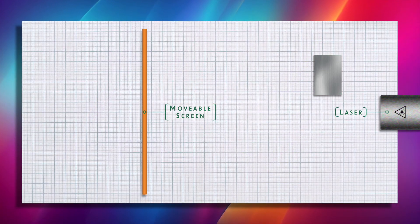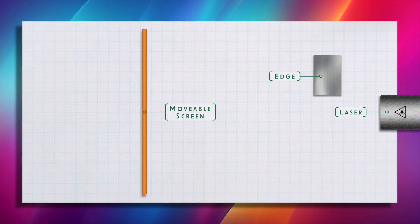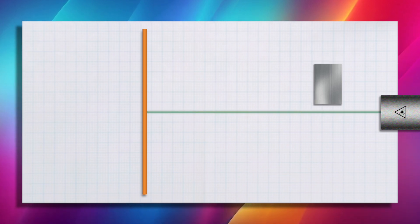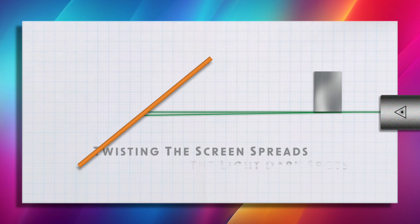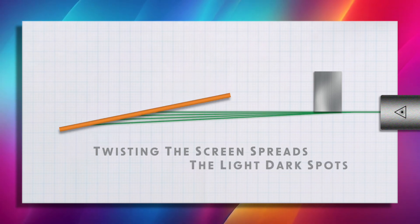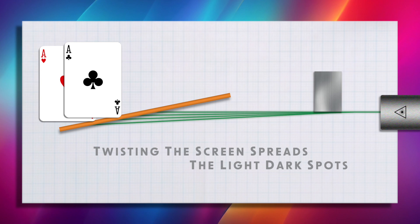A simpler way is to place the screen almost parallel to the laser beam. Like this. How my edge demonstration's laser dot turns into a light dark pattern might be confusing. The laser dot is composed of light and dark spots we cannot see because they are small and close together. Twisting the screen spreads the light dark spots, similar to spreading cards on a table.